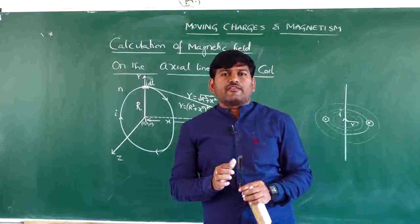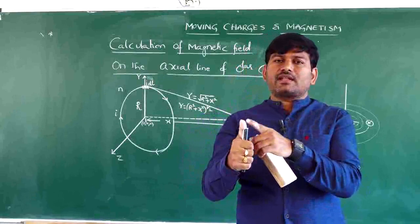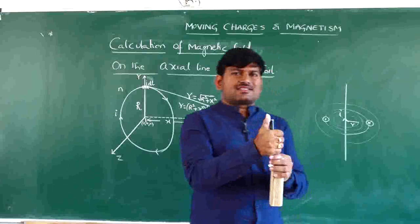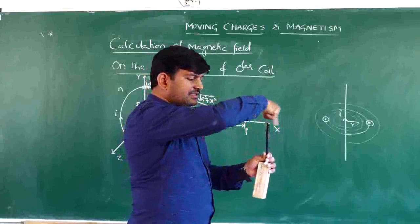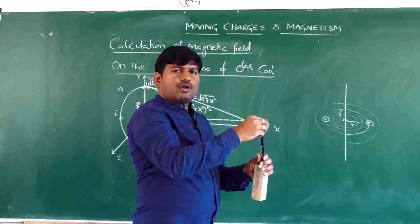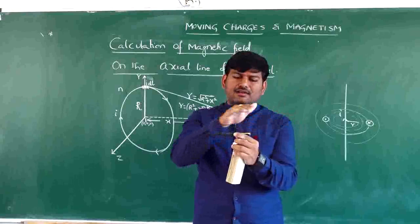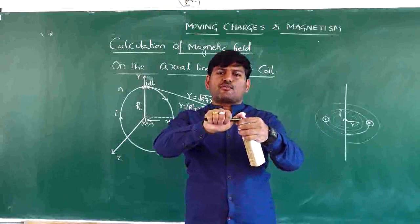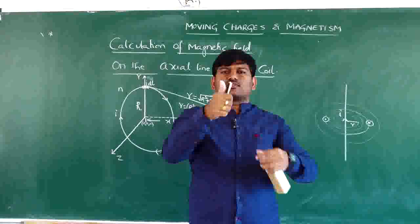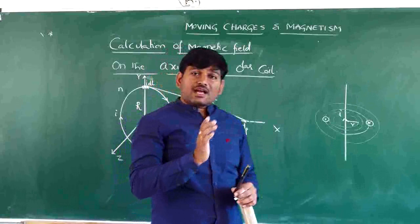The right-hand thumb rule is useful for finding the direction of the magnetic field at a given place due to a current-carrying conductor. If you hold the conductor in your right hand such that the thumb points in the direction of current, then the fingers encircling the conductor give the direction of the magnetic field. If the current is upward, the field lines are anti-clockwise; if downward, they are clockwise.